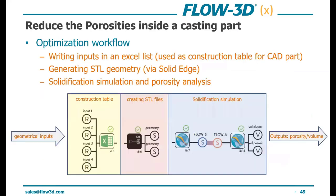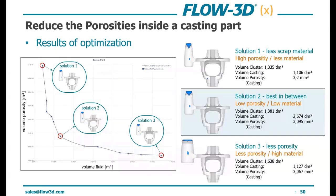With objectives identified, we create a workflow. Our geometrical inputs are written into Excel lists, which serve as a construction table for our CAD parts. Next, we call to Solid Edge, which generates the STL geometry based on the updated geometric inputs. That is then passed into our Flow3D node for the solidification simulation, which outputs a porosity analysis and volume of the casting. Based on the number of runs or budget you've set, the optimization software makes a good prediction for the next iteration.